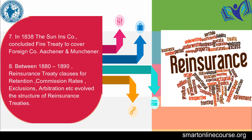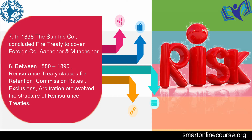Between 1880 and 1890, reinsurance treaty clauses for retention, commission rates, exclusions of perils, arbitrations, etc., evolved the structure of reinsurance treaties. Thus, it was European countries' internal reinsurance relationships.